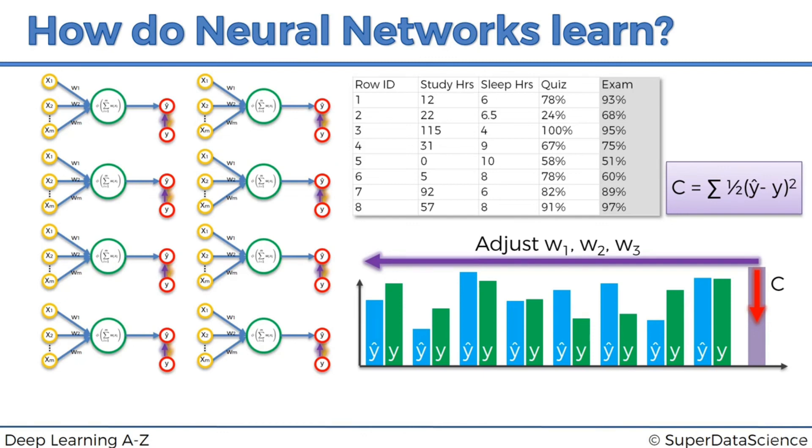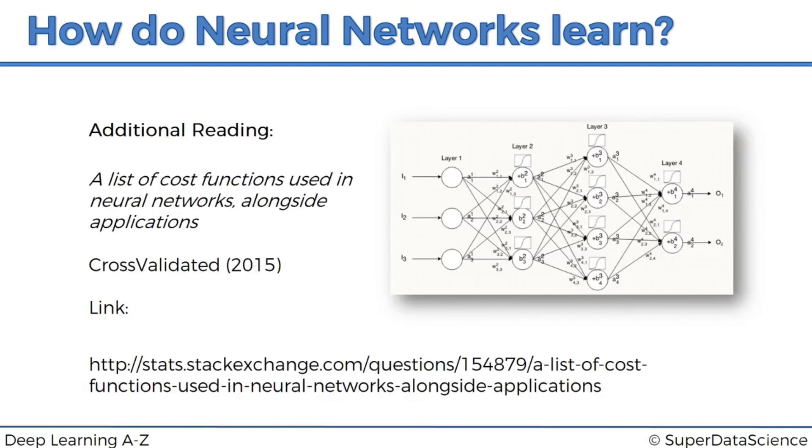Some additional reading that you might want to do for the cost function. I know we just talked about one and there are many different ones. A good article is located on cross-validated. It's called A List of Cost Functions Used in Neural Networks Alongside Applications. The URL is there, but you can just Google for that exact search term or search phrase and this one will be the first one that pops up. It's actually got some good examples and application or use cases for different cost functions. So if you're interested to learn more about cost functions, check out this article. And on that note, I hope you enjoyed today's tutorial. I look forward to seeing you next time. Until then, enjoy.